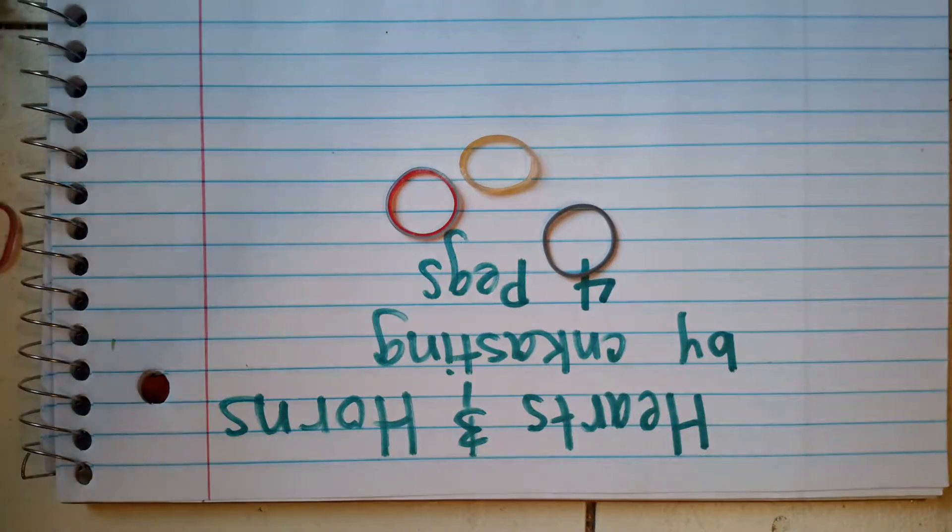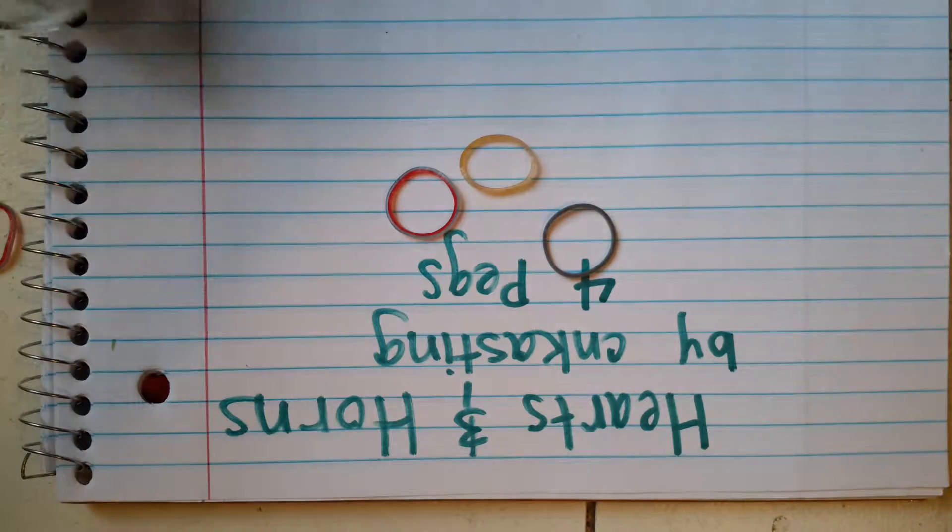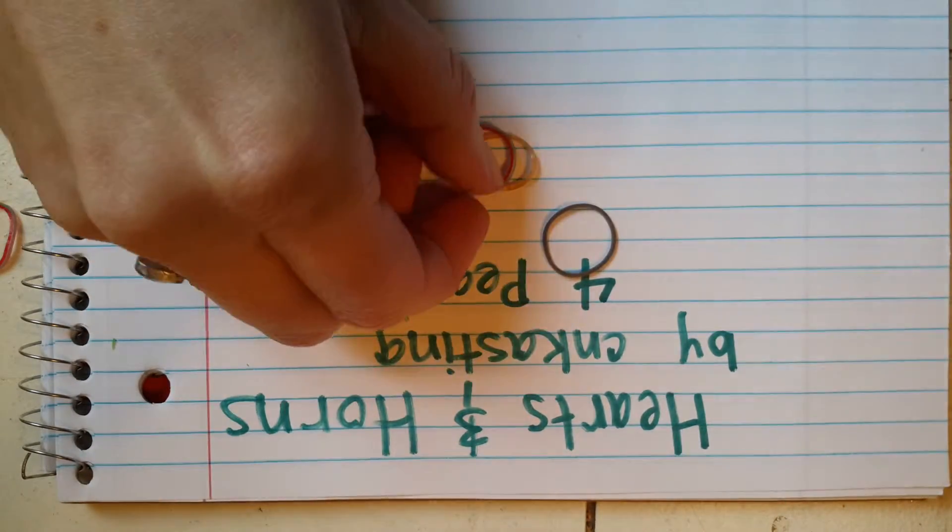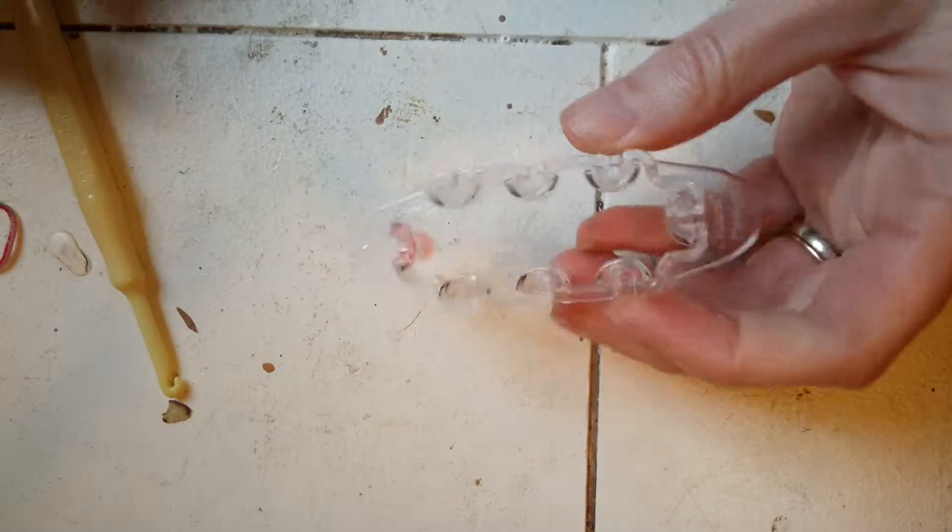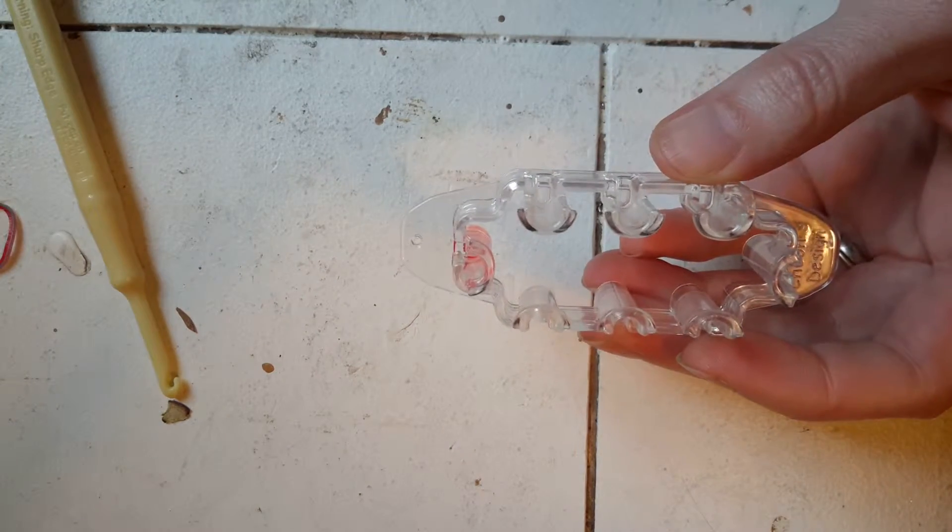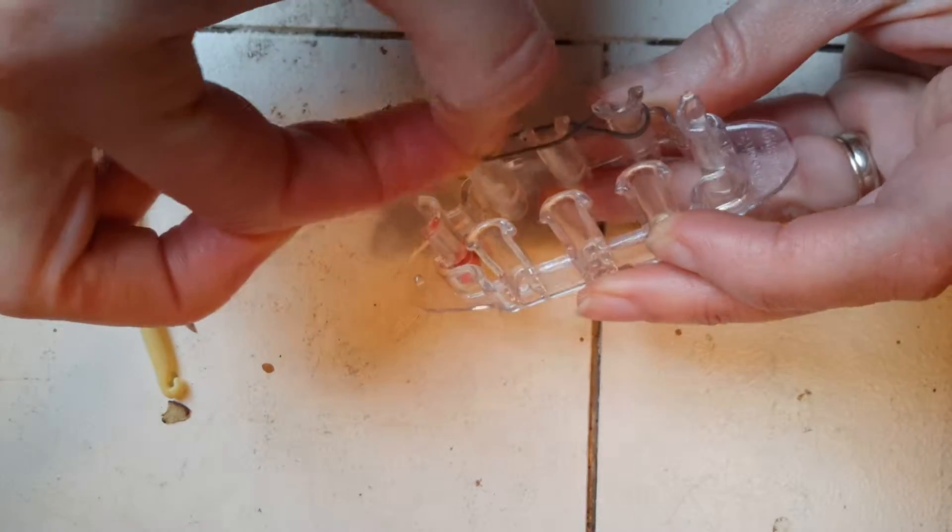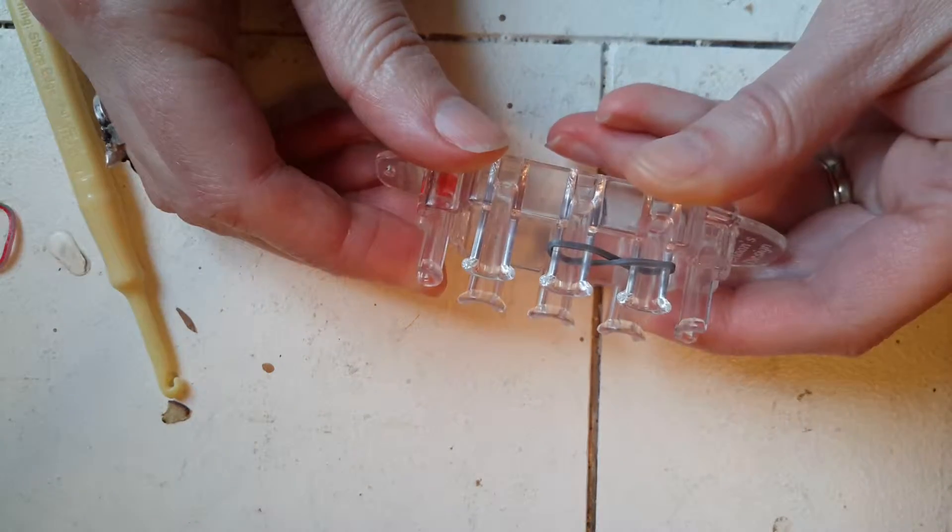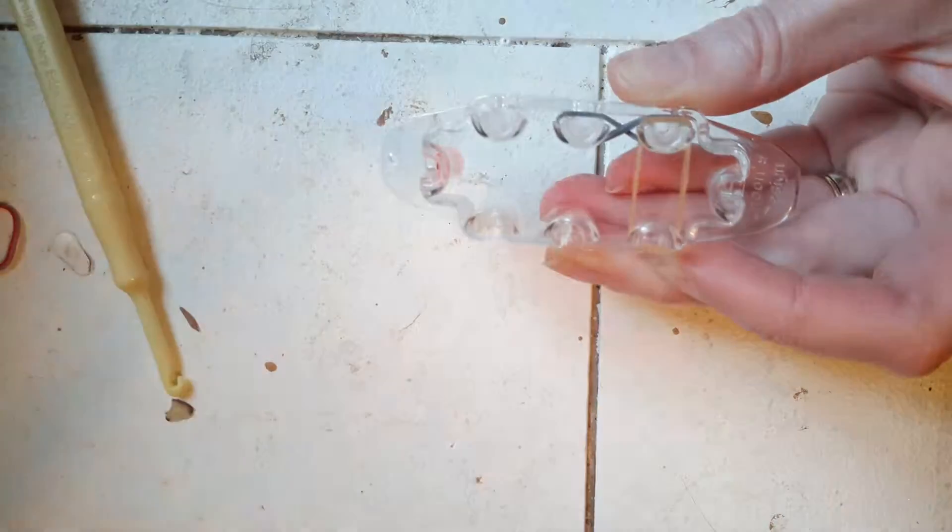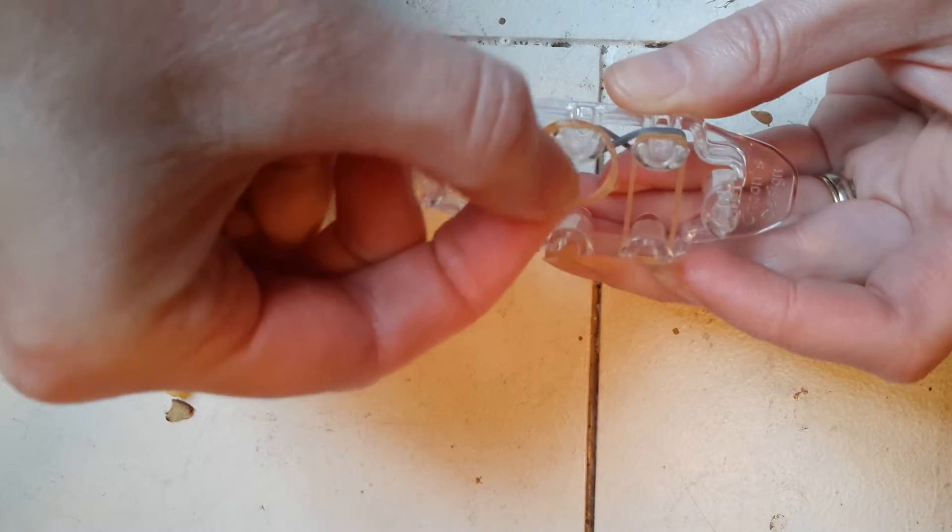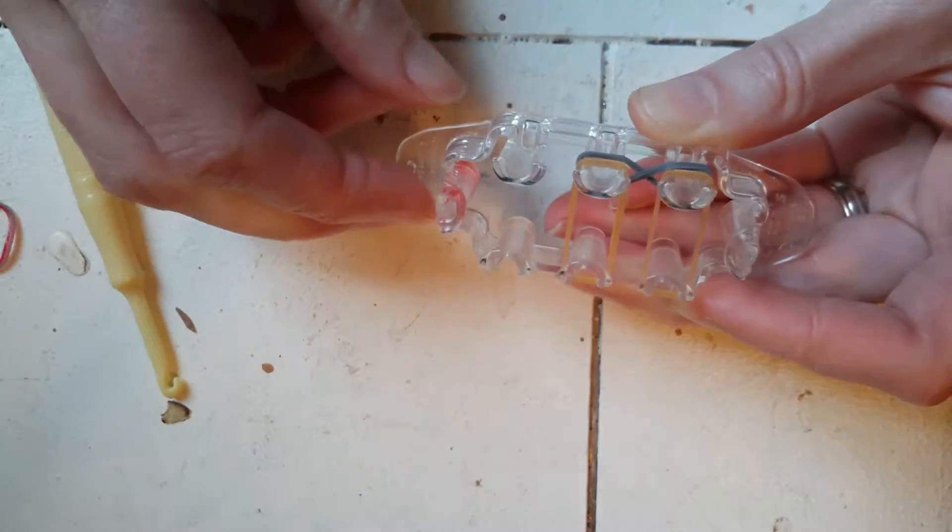I'm going to do this on the monster tail but you can do this on anything that has four pegs. I suppose you could even do it on your forks. All right so I'm going to start off with my gray and do a figure eight on my two front pegs like so. Then I'm going to put on my horns. I'm going to put one on each side going from front to back like so.